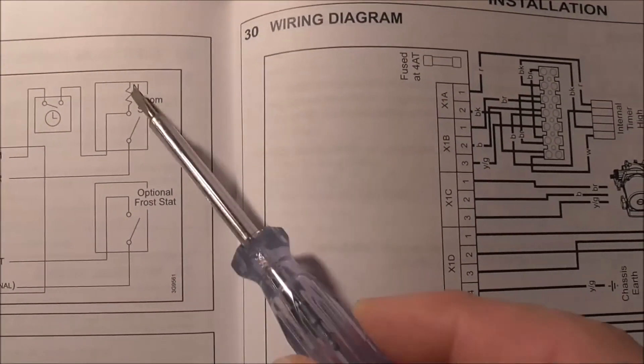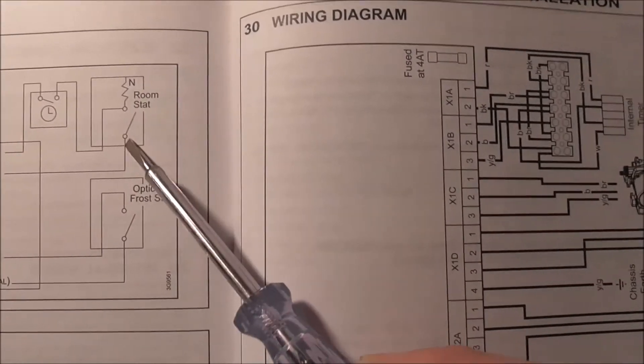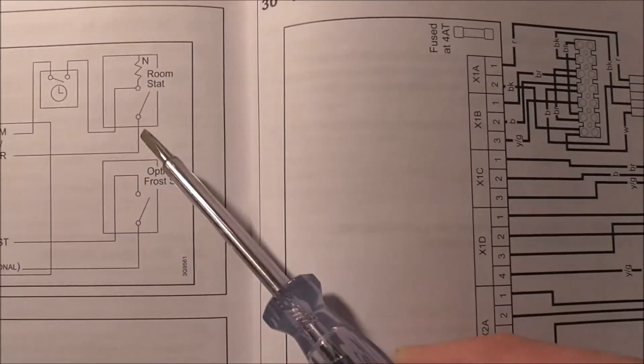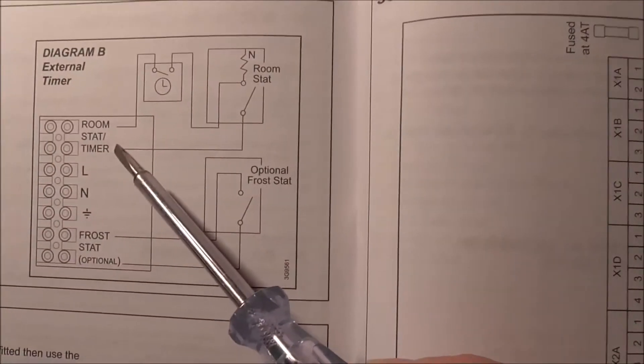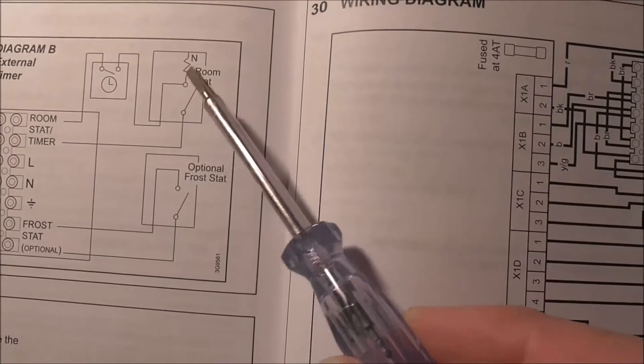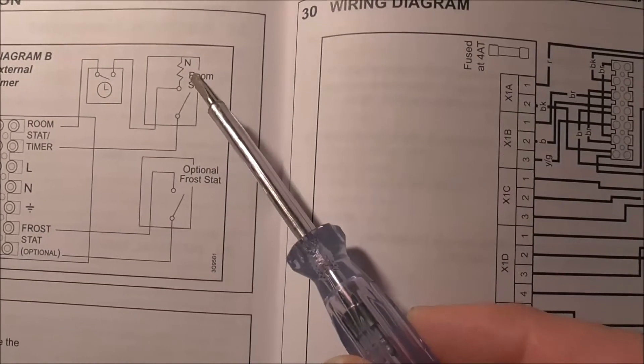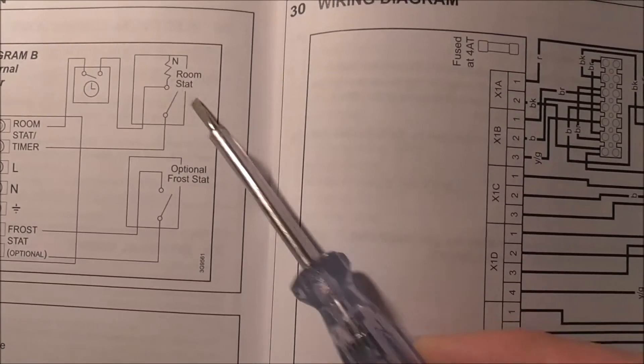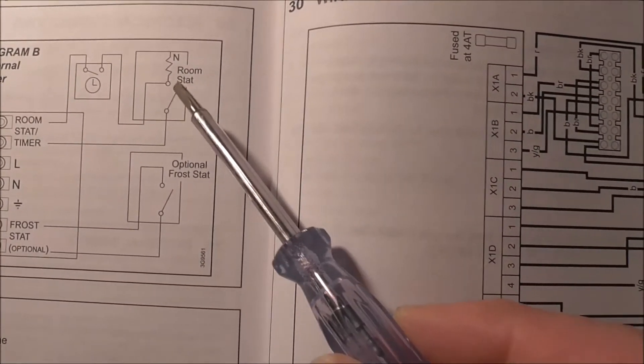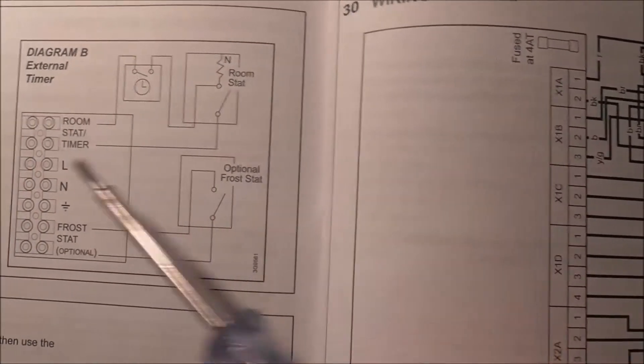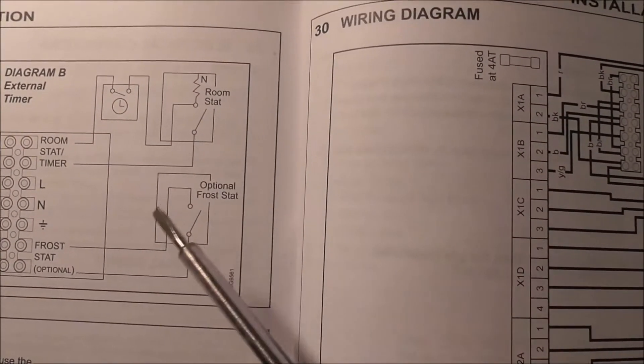So when the thermostat gets alive, it only passes alive to the boiler back if you are under the set temperature. If you are above the set temperature, this switch will be open, not closed. So this is how my boiler is wired.